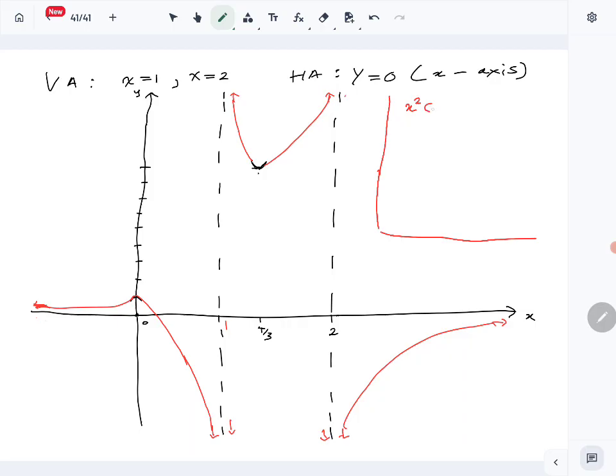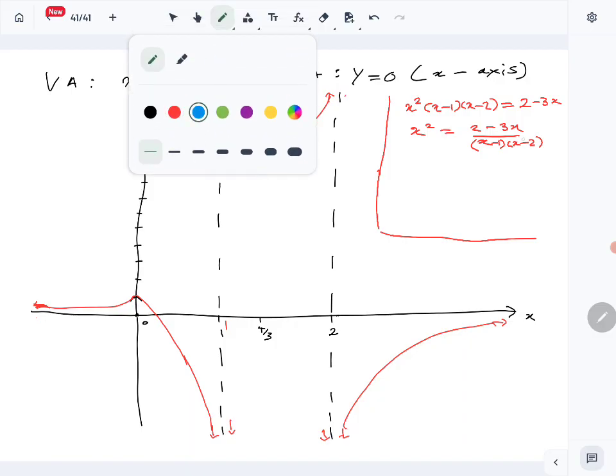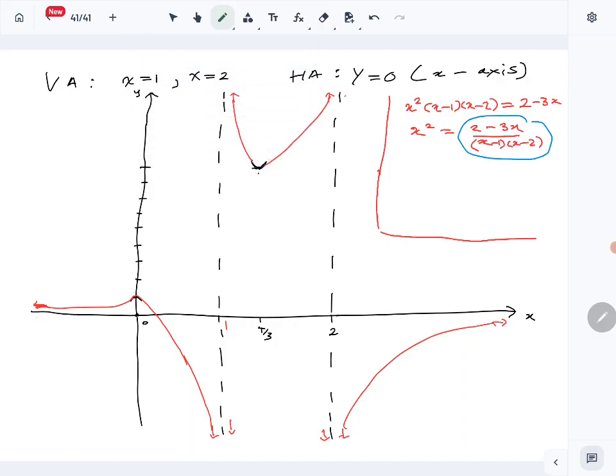x²(x-1)(x-2) = 2-3x. Notice that if we divide by (x-1) and (x-2) on both sides, we get x² = (2-3x)/((x-1)(x-2)). And what is this? This is just the function f(x) that we drew.